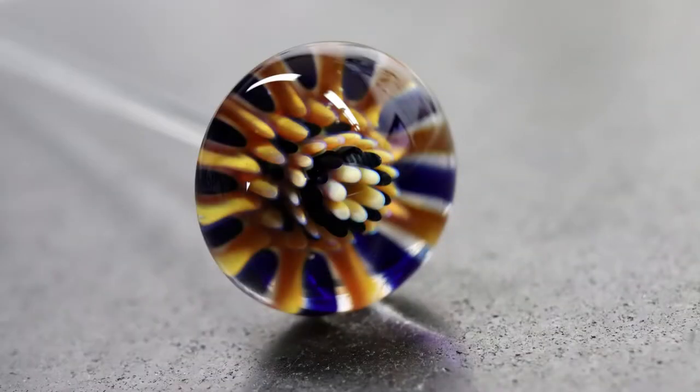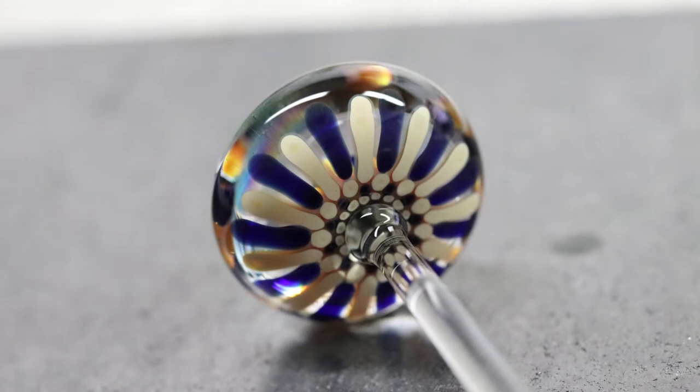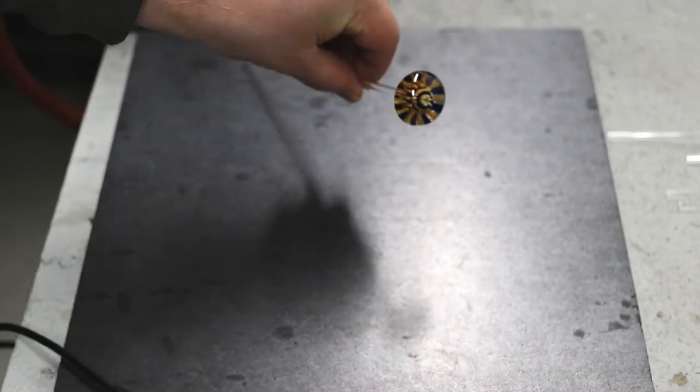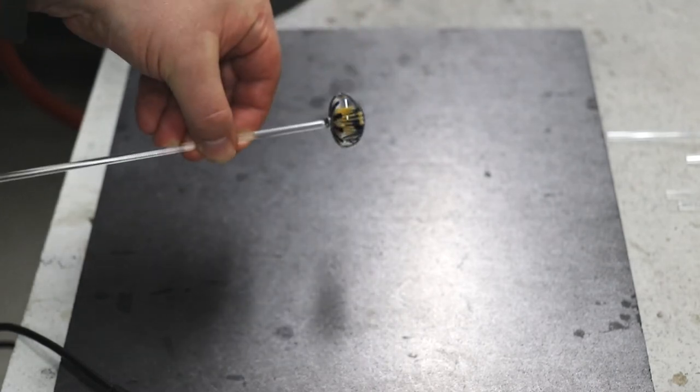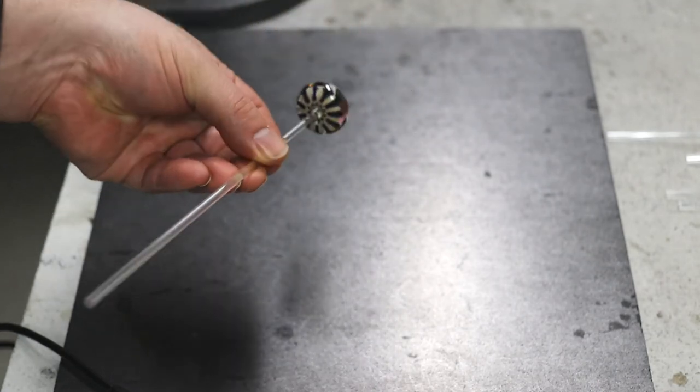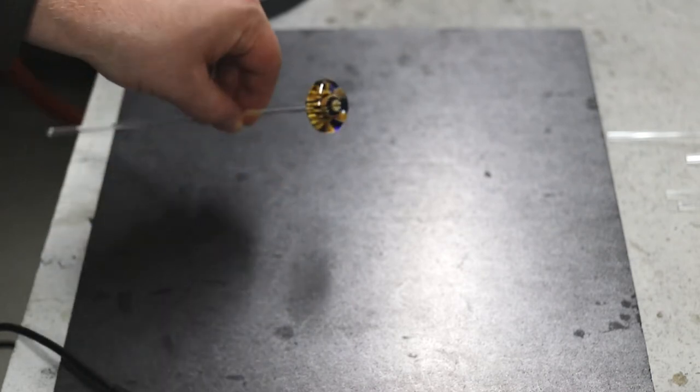Alright, so this is what we're going to be making. It's a very basic implosion pendant. The way we do it will actually make the center much higher than the sides. You can see it nicely. We don't put a background on it for this time. It's very simple, very basic, but it's probably the best place to start.